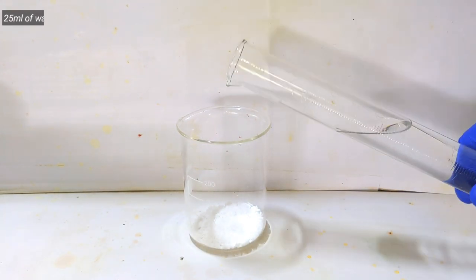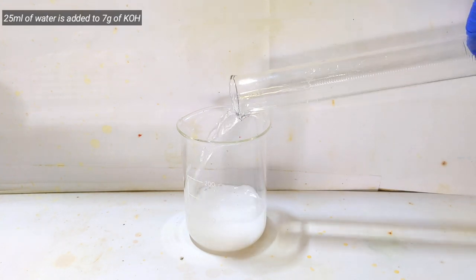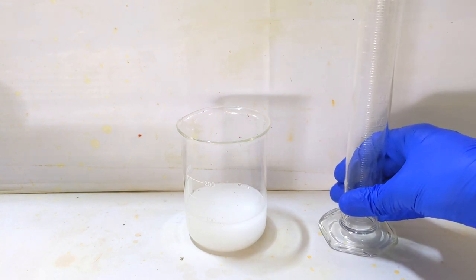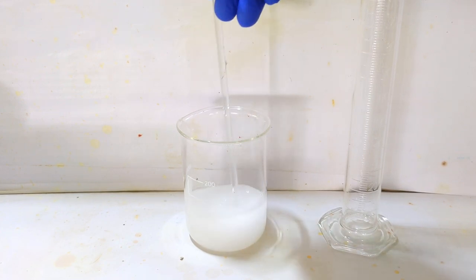Now add 25 mL of distilled water into it. This will heat up a lot and potassium hydroxide will dissolve in water. With the help of a glass stirring rod, dissolve it well and the solution will eventually turn clear.